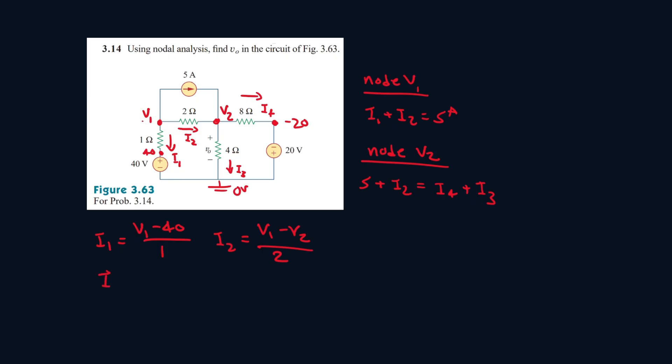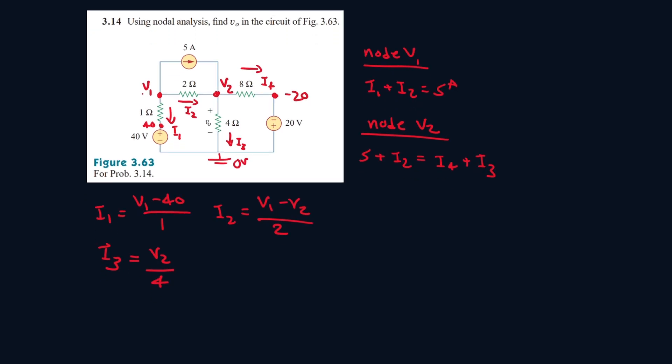Then we have I3, it goes from high potential, V2, to low potential, which is 0, all over 4. Then we have I4, plus my high potential, V2, minus a low potential, minus 20, all over 8.